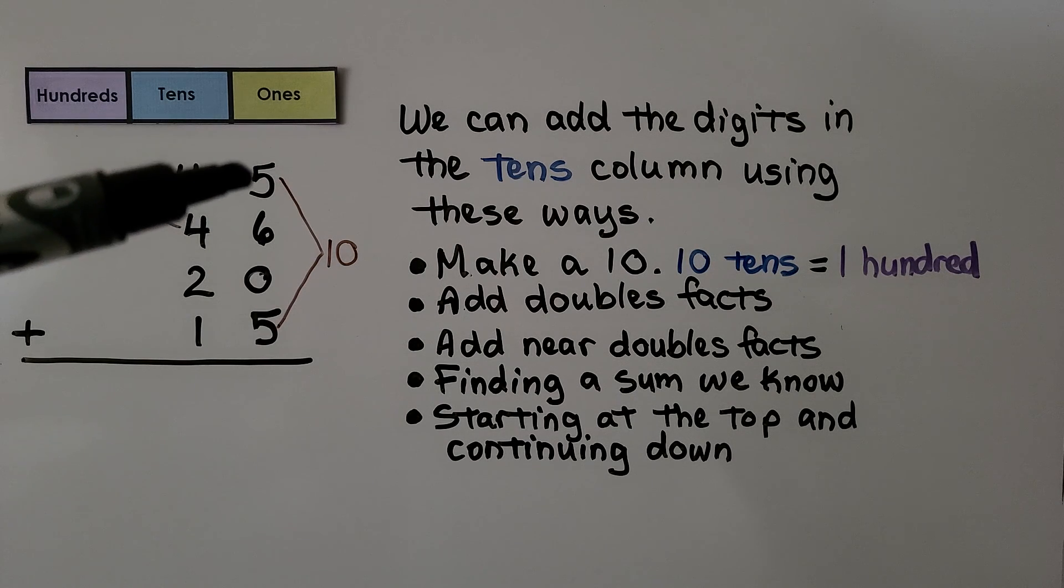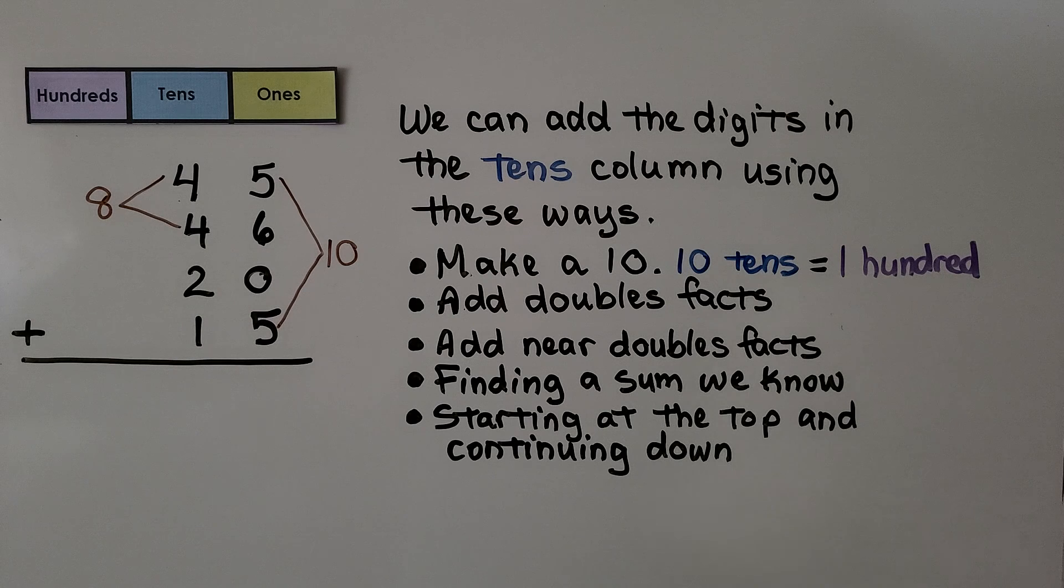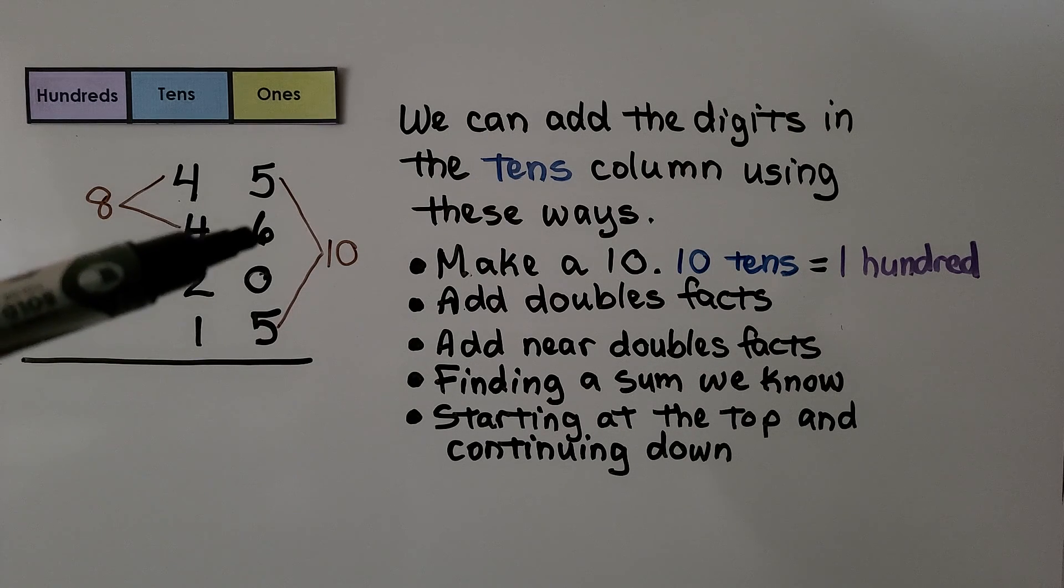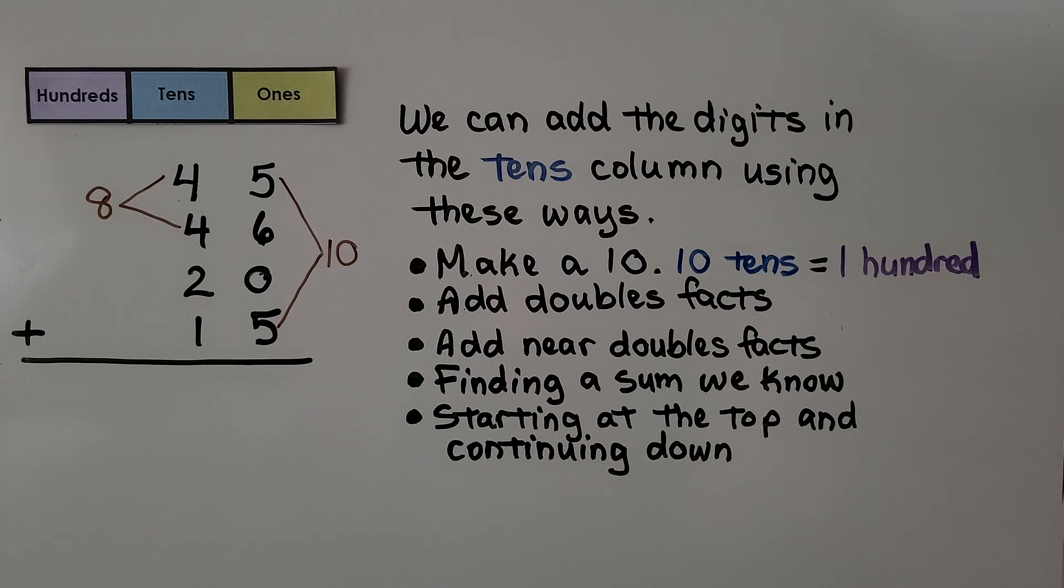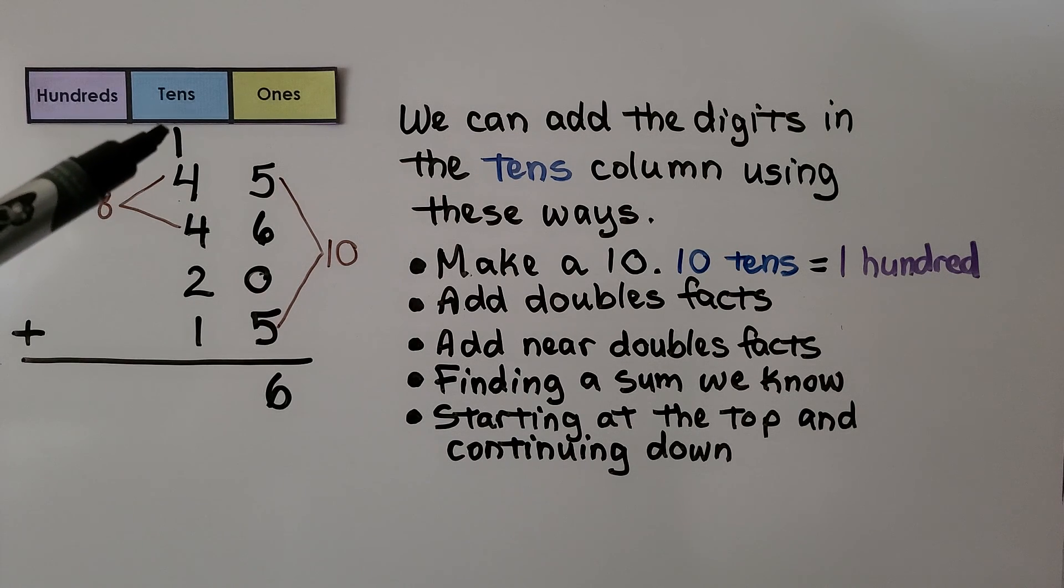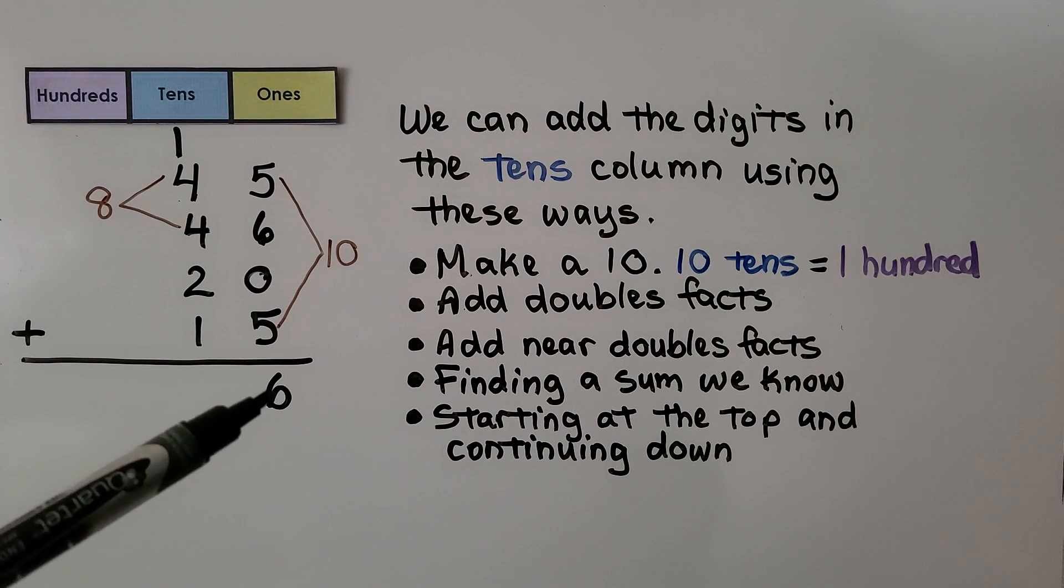We can do the same thing with the tens that we do with the ones. So starting with the ones place, we have 5 plus 5 is equal to 10, plus 0 it's still 10, plus 6 more is equal to 16. It was important to start adding in the ones column because we had to regroup 1 ten and write the 6 in the ones place.